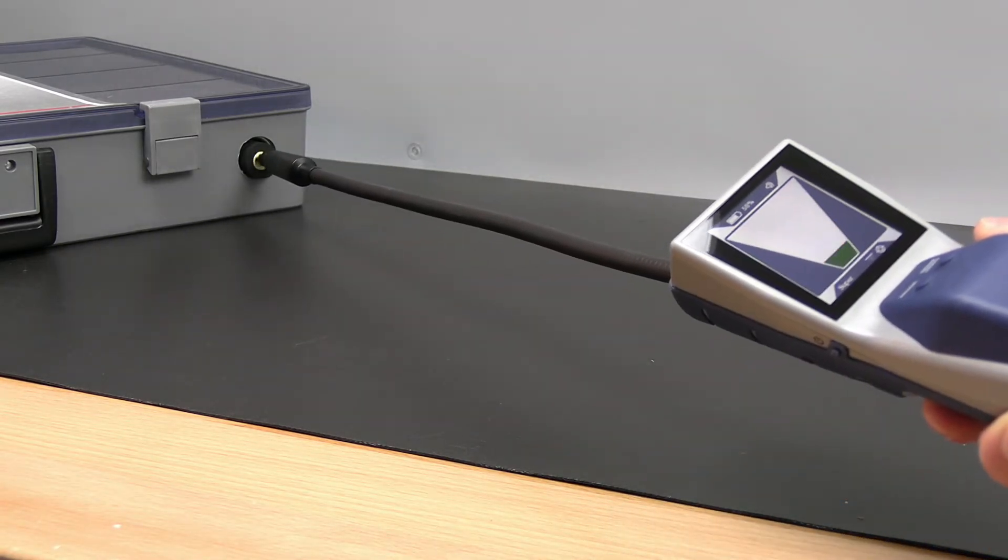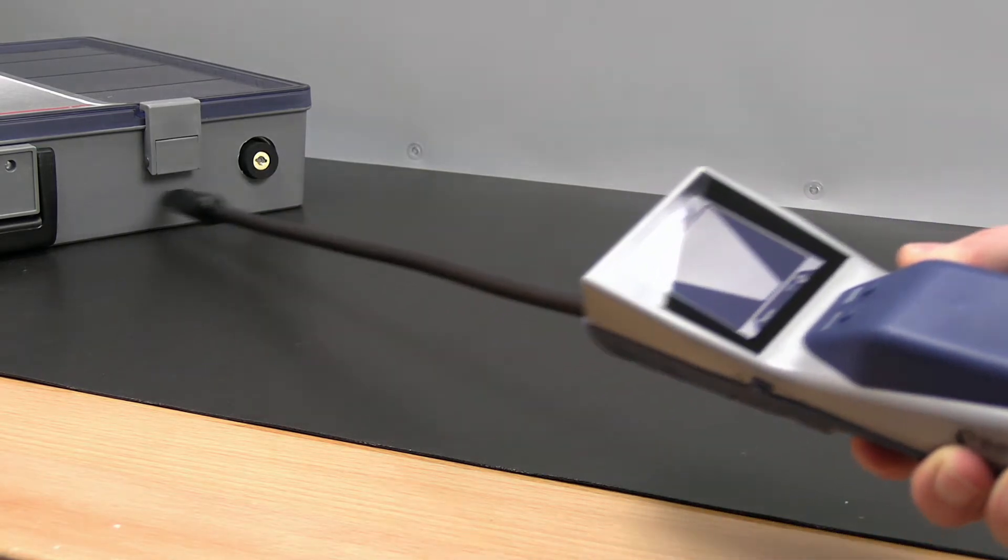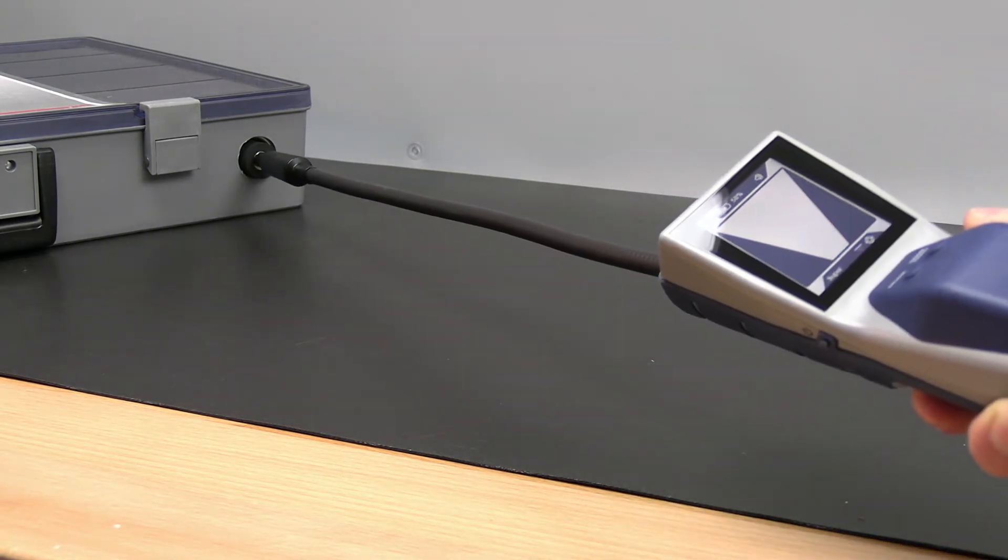When a leak is identified, pull the probe away from the leak for a few seconds and then return the probe to the suspected leak site to verify the leak.